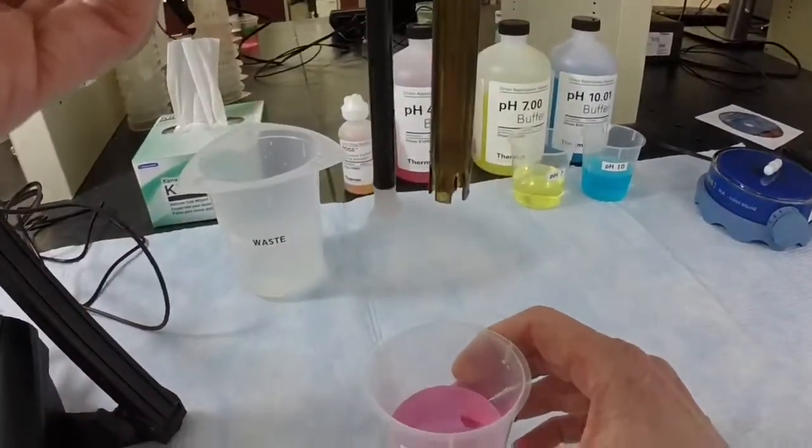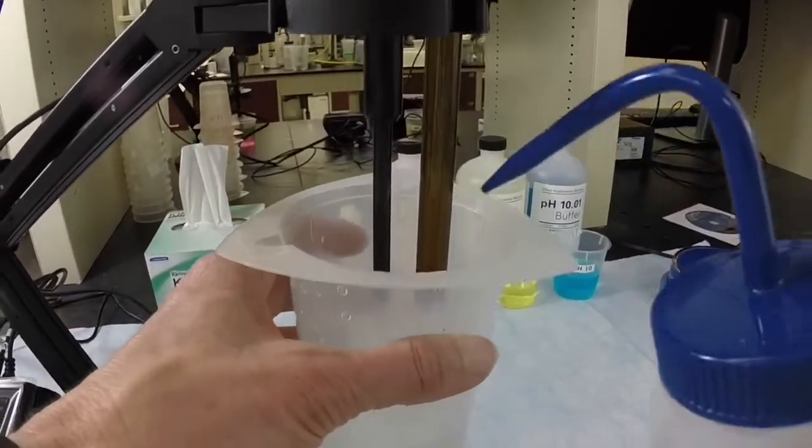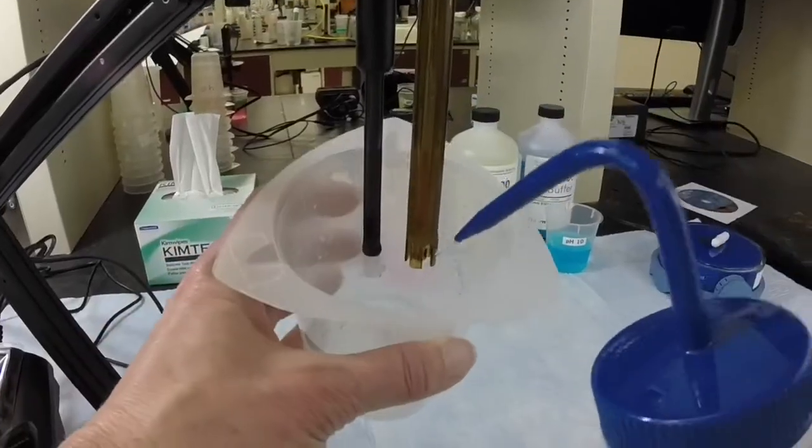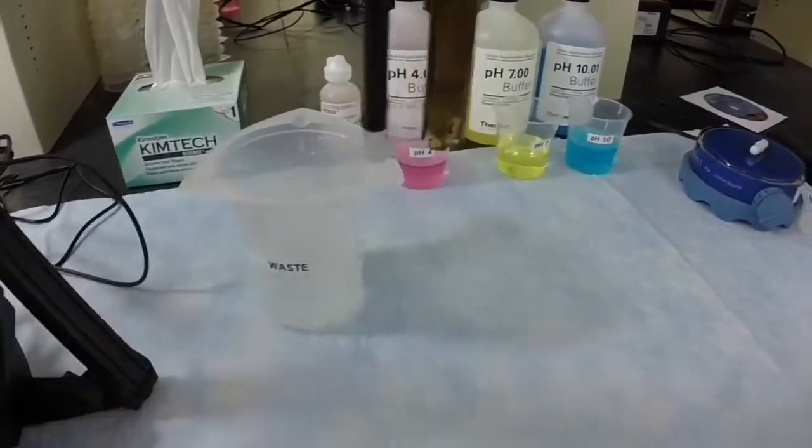Remove the electrode and stirrer from the buffer. Rinse thoroughly with DI water to remove all traces of the buffer. Blot gently and briefly.